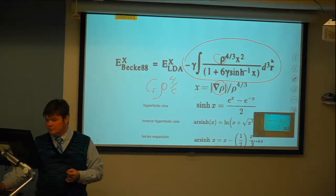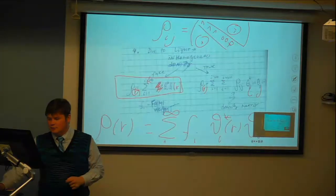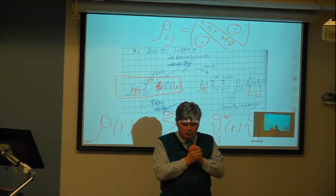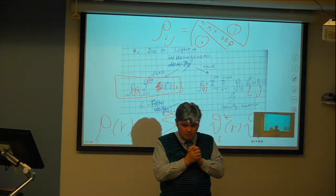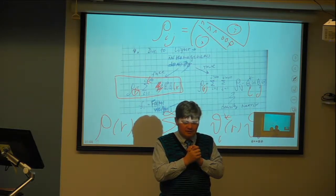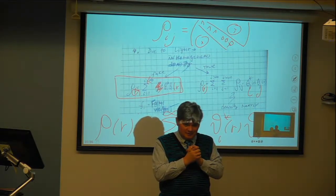If you involve the spatial derivative of density, then you are not in the local but in the generalized gradient approximation. When we met last time, we were making a slow start into the theory of excited states. There are many approaches; we start with the extension of the density of states called time-dependent density functional theory.